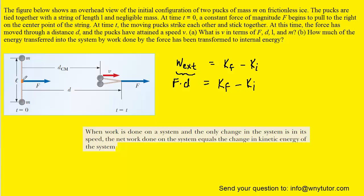We can see that the center of mass of the system would lie right between the two pucks, so we can mark that with a little orange dot here. The center of mass travels in a straight line until it reaches this position right here, and we can mark that with an orange dot as well. That orange line is actually going to represent the displacement that we need to plug into our work-kinetic energy theorem. We can label it as D of the center of mass, marked here in the diagram.